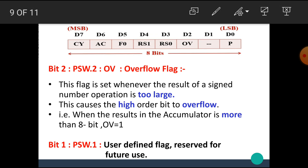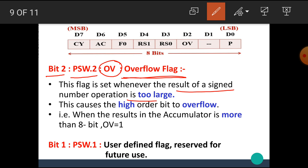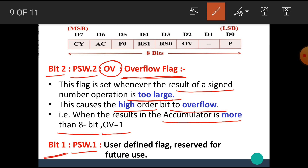Bit 2, also called PSW.2, is the OV flag or overflow flag. This flag is set whenever the result of a signed number operation is too large, causing the higher order bit to overflow. That is, when the result in the accumulator is more than 8 bits, OV is set to 1. Bit 1, PSW.1, is a user-defined bit reserved for future use.